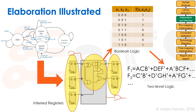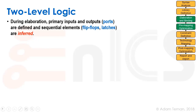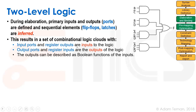We know that each of these output statements in our Boolean truth table can be described as a sum of products or product of sums. Here we have a sum-of-products representation. During elaboration, our primary inputs and outputs and sequential elements — flip-flops and latches — are inferred. This results in a set of combinational logic clouds with input ports and register outputs as inputs to the logic, and output ports and register inputs as outputs of the logic. We can describe the outputs as Boolean functions of the inputs. Our sum-of-products is implemented as a bunch of AND gates and a single OR gate that connects them all.